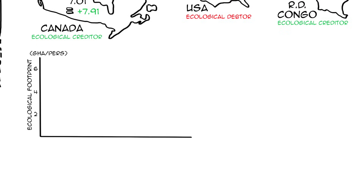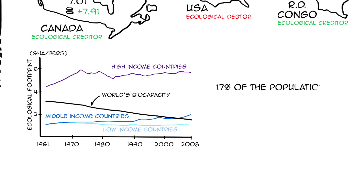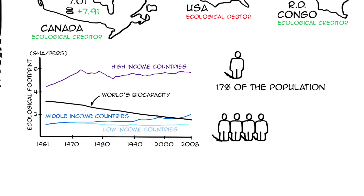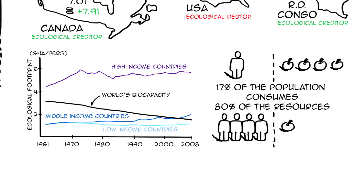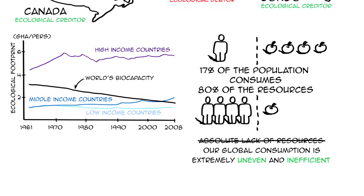The Global Footprint Network published footprints for low, middle, and high-income countries between 1961 and 2008. Looking at the world's average biocapacity, you notice it is systematically decreasing. Basically, the story reads: the wealthier people are, the bigger the footprint. This is confirmed by the fact that 17% of the world's population consumes 80% of the world's resources. So the main problem is not the absolute lack of resources — it's the fact that our global consumption is extremely uneven and inefficient.